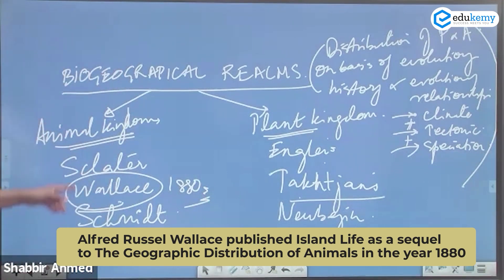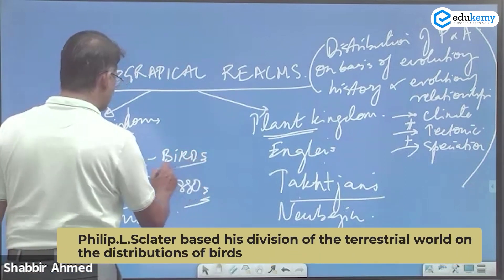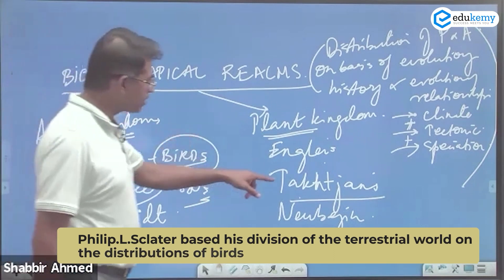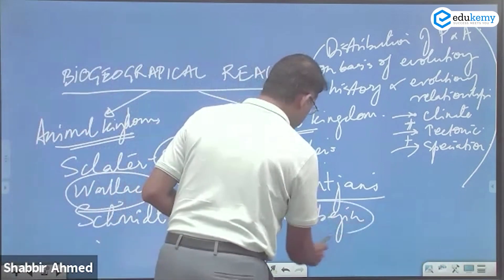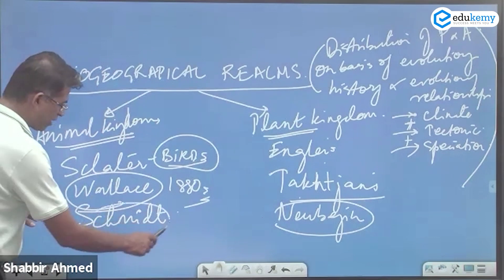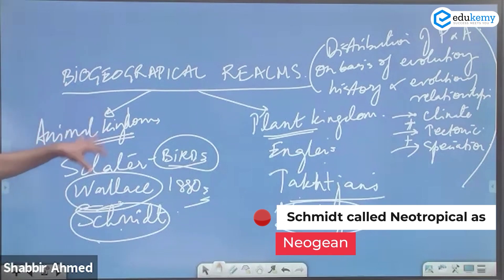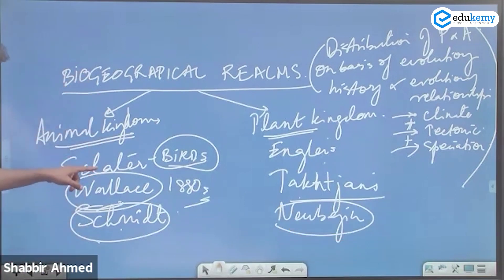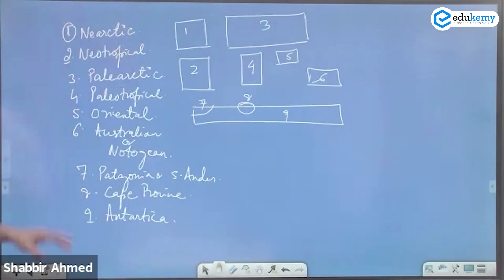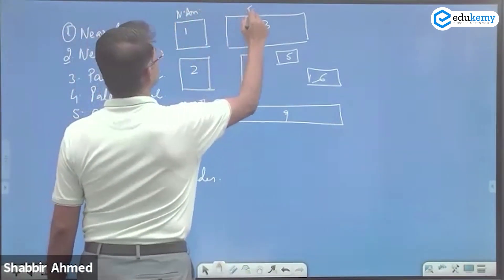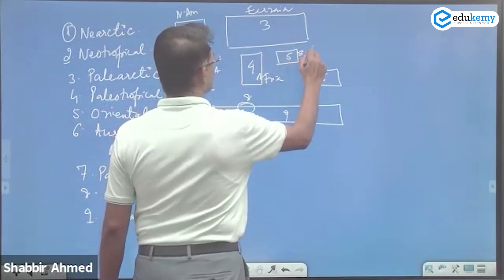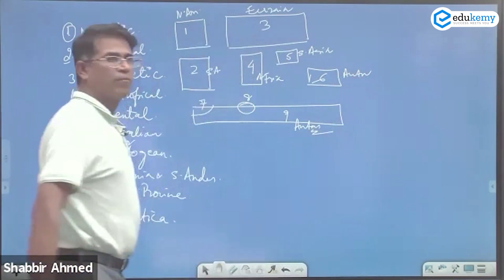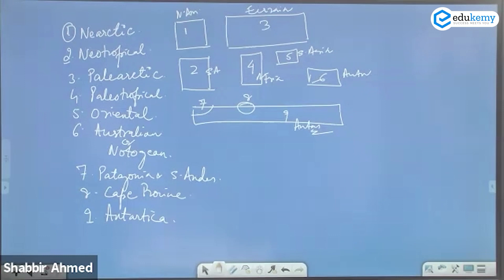Sclater gave the animal kingdoms map; Engler and Takhtajan's scheme and Newbigin's scheme covered the plants. They have already asked about Newbigin once and some parts of Schmidt. The term 'Notogean' was used by Schmidt. You cannot study every scheme in detail, so I have given you a generic map — North America, Eurasia, South America, Africa, South Asia, Australia, Antarctica.